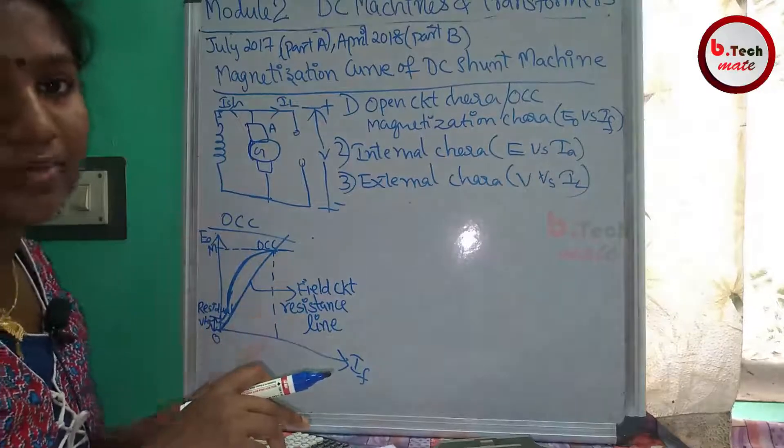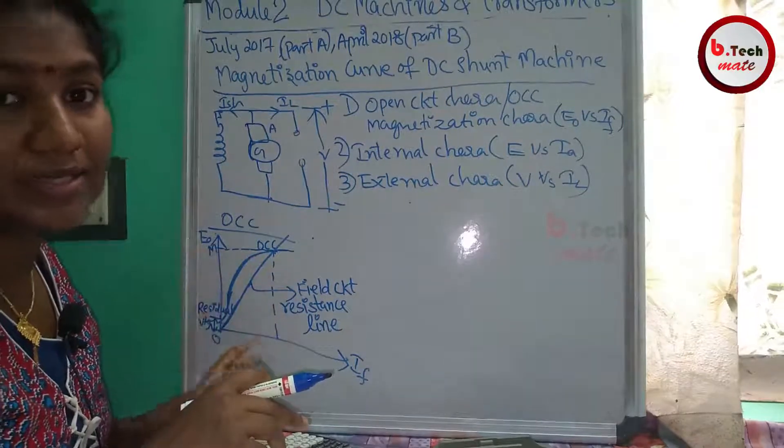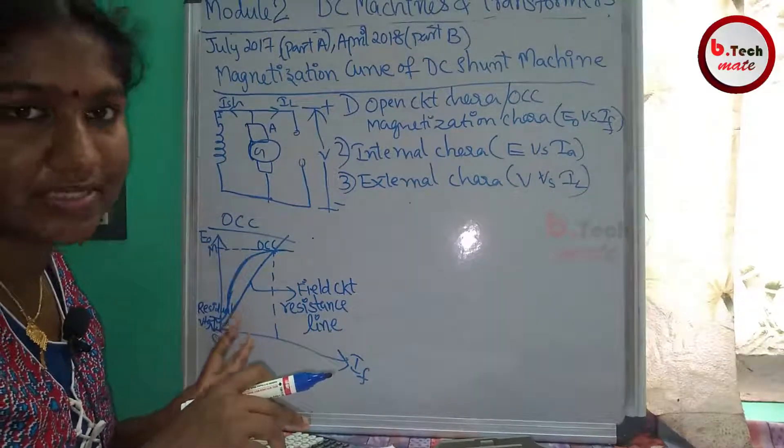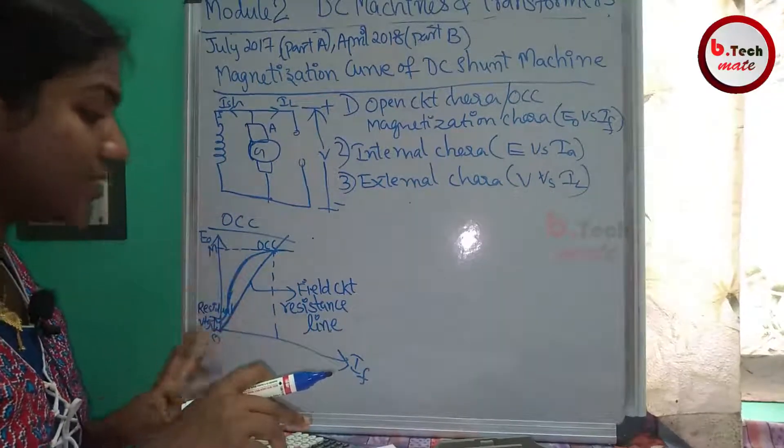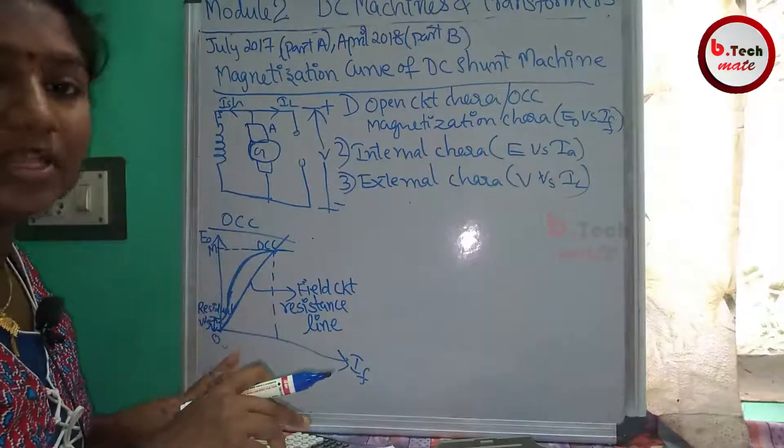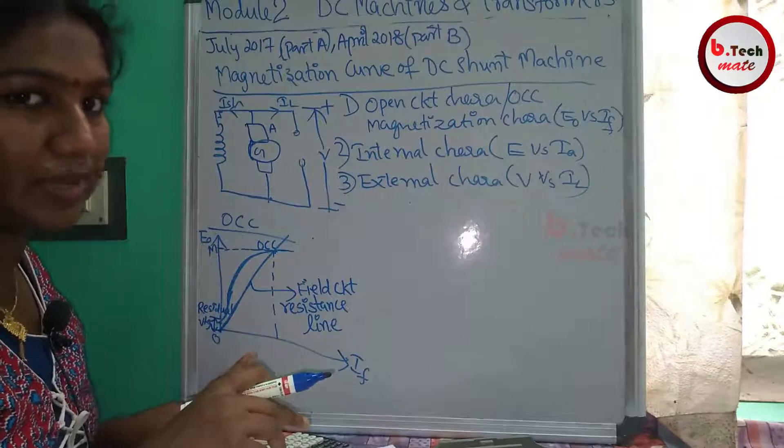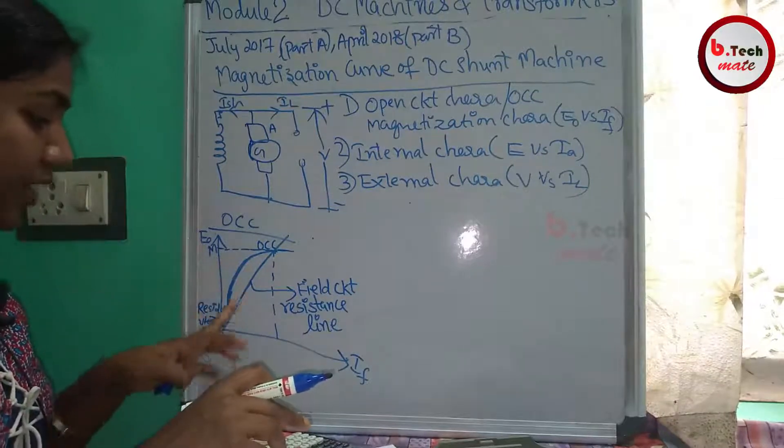In any machine — DC machines — we have residual magnetism. So the first condition is that we must have residual magnetism to build up voltage. That is the first condition.